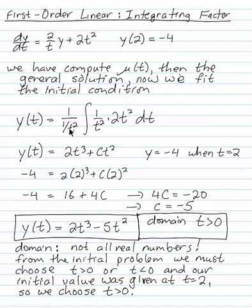The mu of t was 1 over t squared, and our formula gave us 1 over t squared times the integral of 1 over t squared times 2t squared with respect to t. When we simplified that completely, evaluated the integral, and multiplied correctly, we have y of t is 2t cubed plus ct squared.